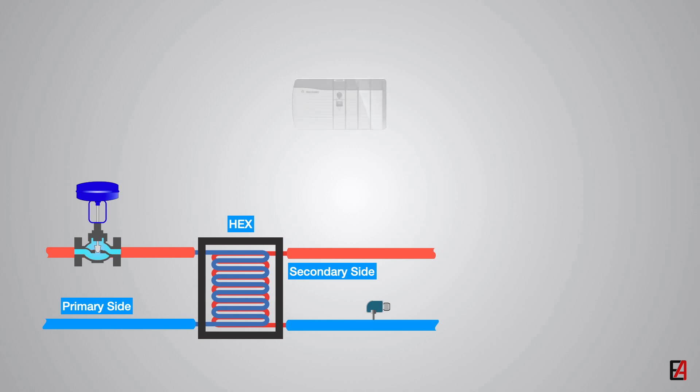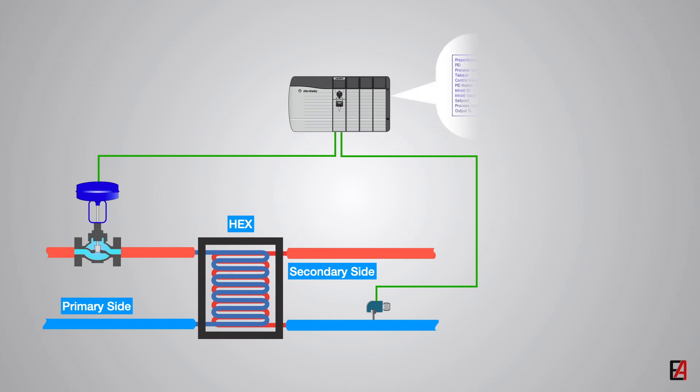In order to maintain the setpoint, the PLC controller will continuously monitor the secondary side temperature and activate the control valve actuator on the primary side to maintain the desired setpoint. The PLC will have a PID controller in order to have optimum control of the heat exchanger secondary side temperature.